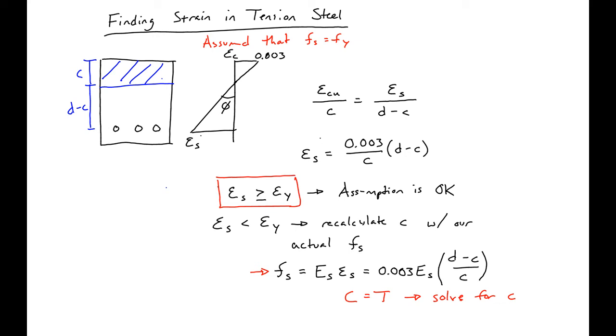So the other thing that we need to check is what the actual steel strain is. If our ES is greater than 0.005, then our section is tension controlled. And if our section is tension controlled, we can use a phi factor of 0.9 in ACI.